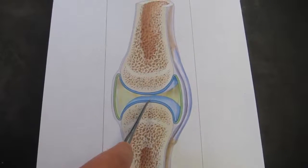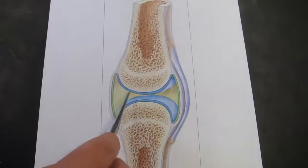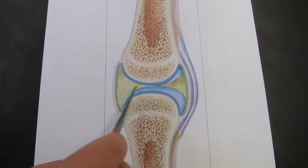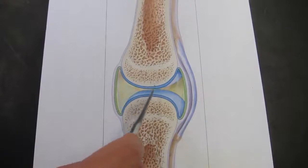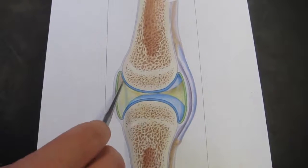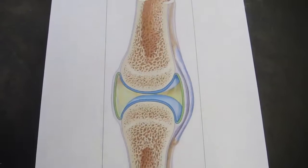So as the cartilages are being compressed, it kind of squeezes them out, and then when the compression is removed, they get to refill with the fluid from this space. And that helps to nourish and bring oxygen to the cells that live in this articular cartilage.